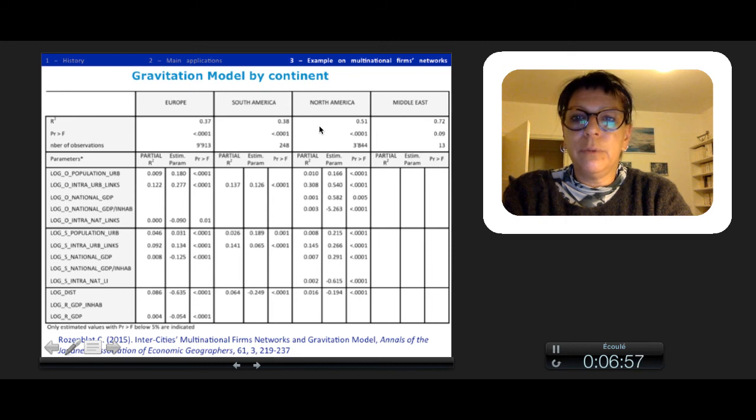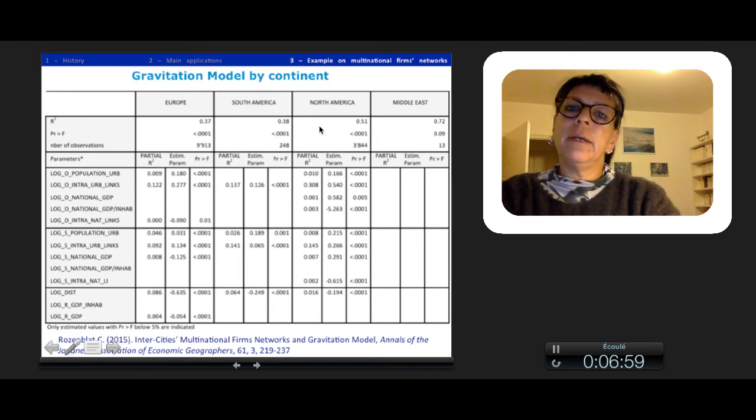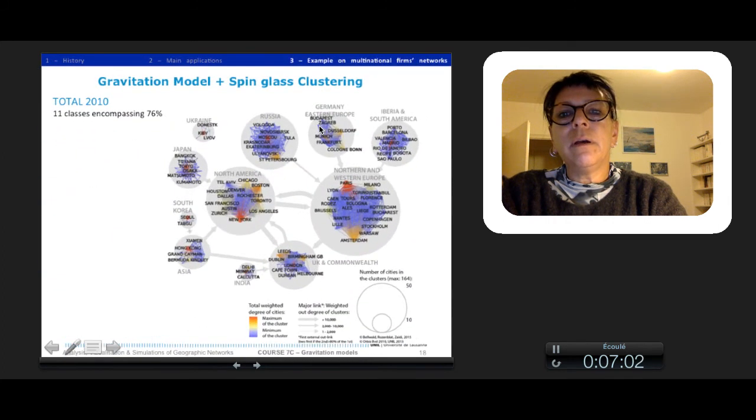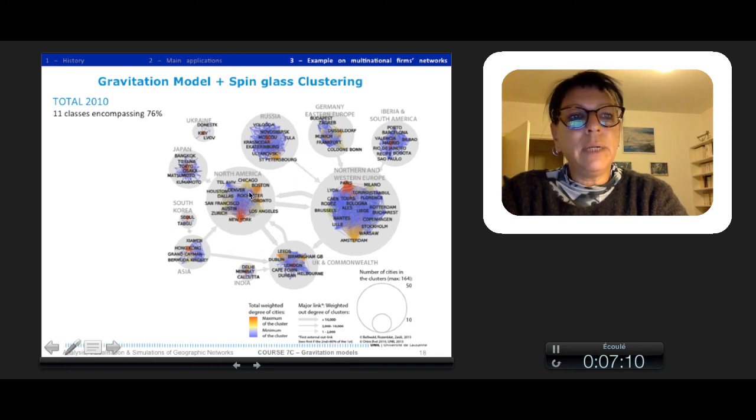But even the results of R-square are not so good, so I tried another thing. According to a classification of the different cities with a spin-glass clustering, which is quite good, I used this class in order to apply again the same gravitation model.